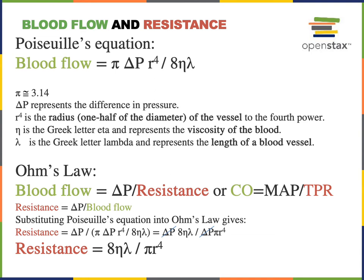In the denominator of the equation, 8 is just a constant, and the Greek letter eta (η) represents the viscosity of blood. If the blood is thicker — more cells and less liquid, or more protein relative to liquid — this creates thicker blood that flows more slowly. So increasing viscosity decreases the rate of flow. Similarly, the Greek letter lambda (λ) represents the length of a blood vessel; increasing vessel length leads to a decrease in the rate of blood flow.